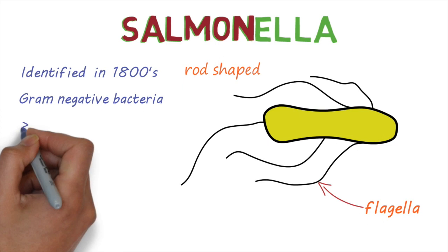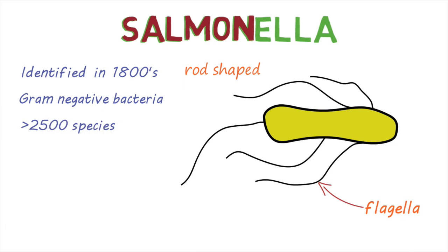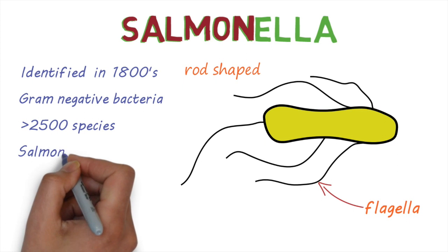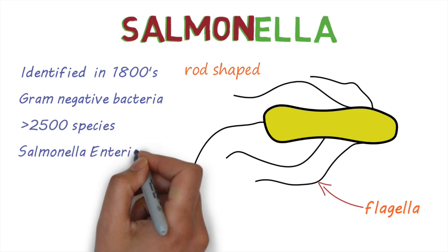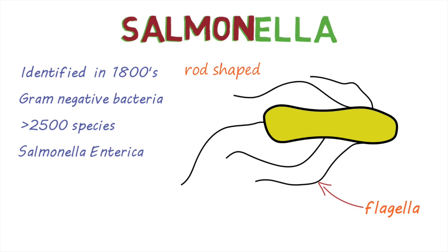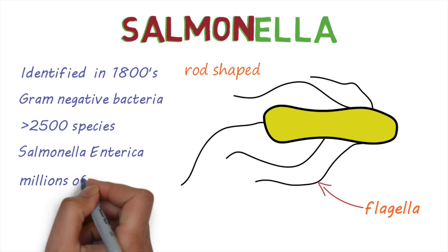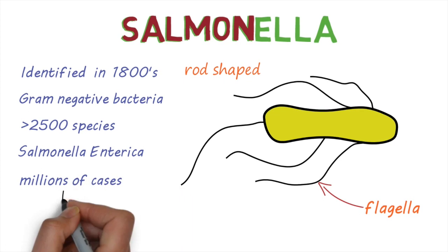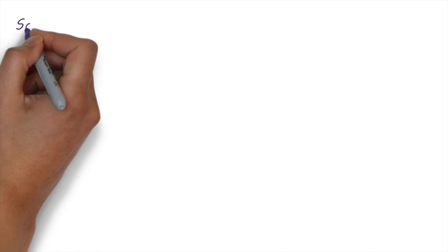There are over 2,500 different types of the bacteria. Most human disease is caused by bacteria belonging to a subspecies called Salmonella enterica. It's estimated that tens of millions of human cases occur worldwide every year, causing over 100,000 deaths.